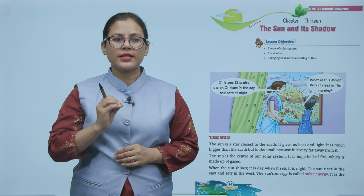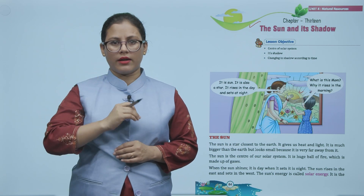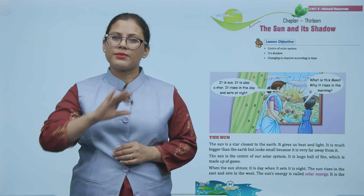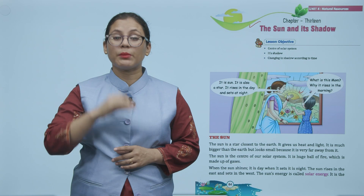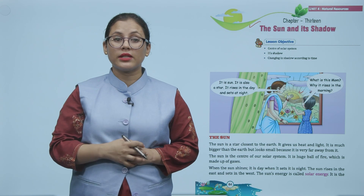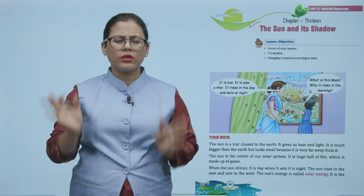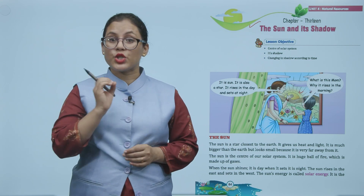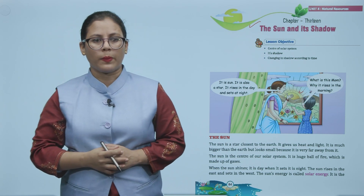Sun aapka earth se sabse closest star hai. Aap sabi jante honge, sun is a star. Isse humi heat and light milti hai. Ani earth se bohot bada hai, lekin humi chota nazar ata because it is very far away from us.